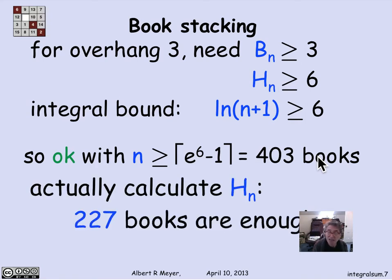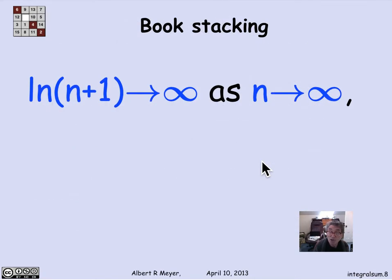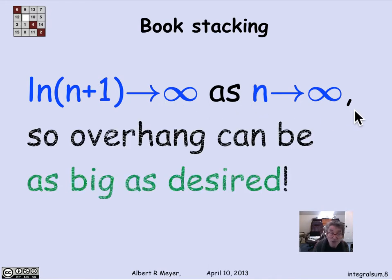Well, if you do the actual calculation instead of the estimate, it turns out that 227 books are enough. So this estimate's a little off. But for our purposes, it tells us a dramatic fact, which is that we know that log of n plus 1 approaches infinity as n approaches infinity. That means that with enough books, I can get out as far as I want. You tell me how many book lengths you want to be out, I'll use the log n formula to calculate how many books I need to get that far out.